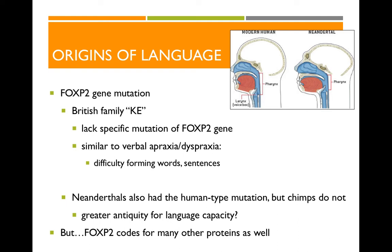Geneticists looked at the DNA of these family members and found that those who could not use language successfully all had a specific mutation on a gene called the FOXP2 gene. We all have the FOXP2 gene, and many animals also have it, but it's the specific mutation — the specific 'flavor' of FOXP2 — that may have something to do with language. It was hypothesized that at some point in the past, our ancestors developed this specific FOXP2 mutation, essentially a 'language gene' that gave ancestors a greater ability to regulate sound while speaking.